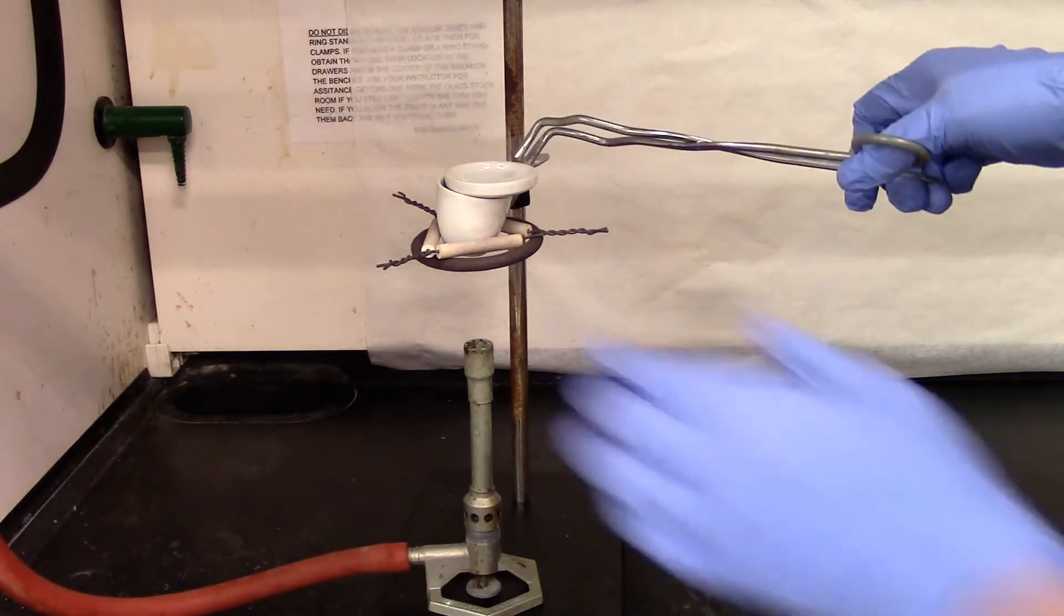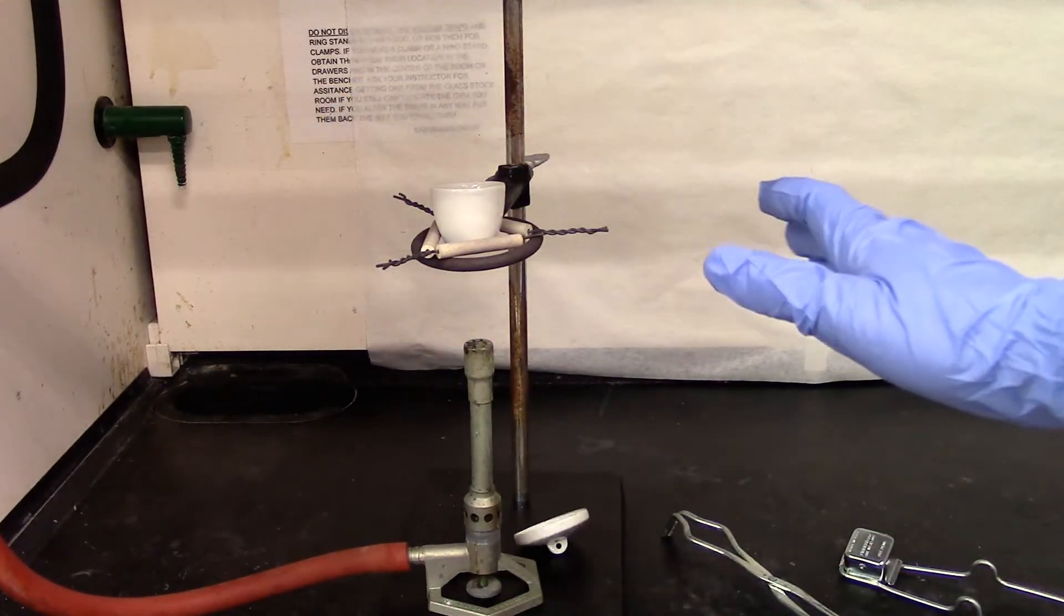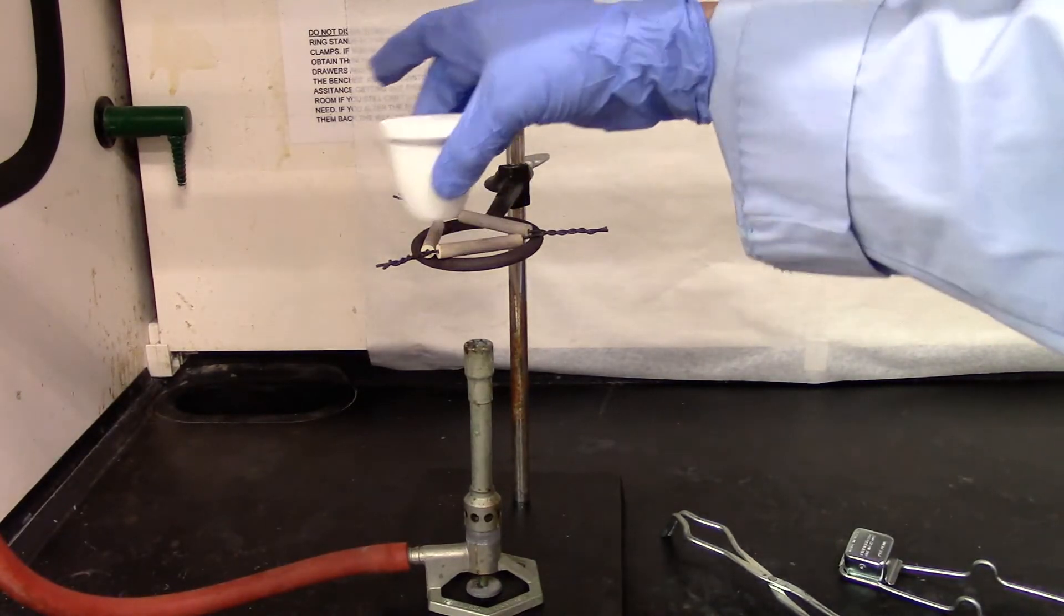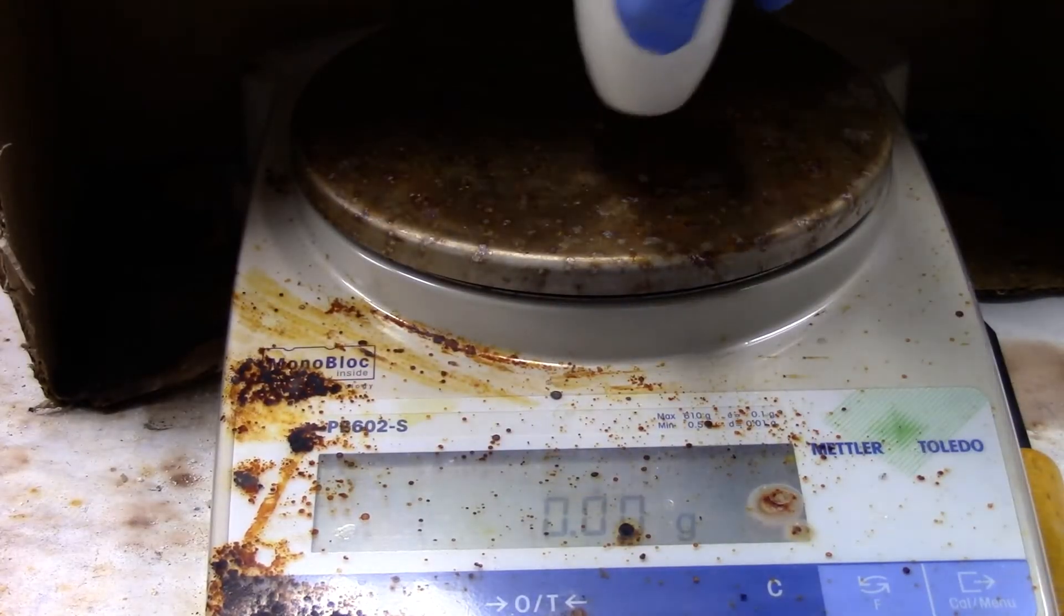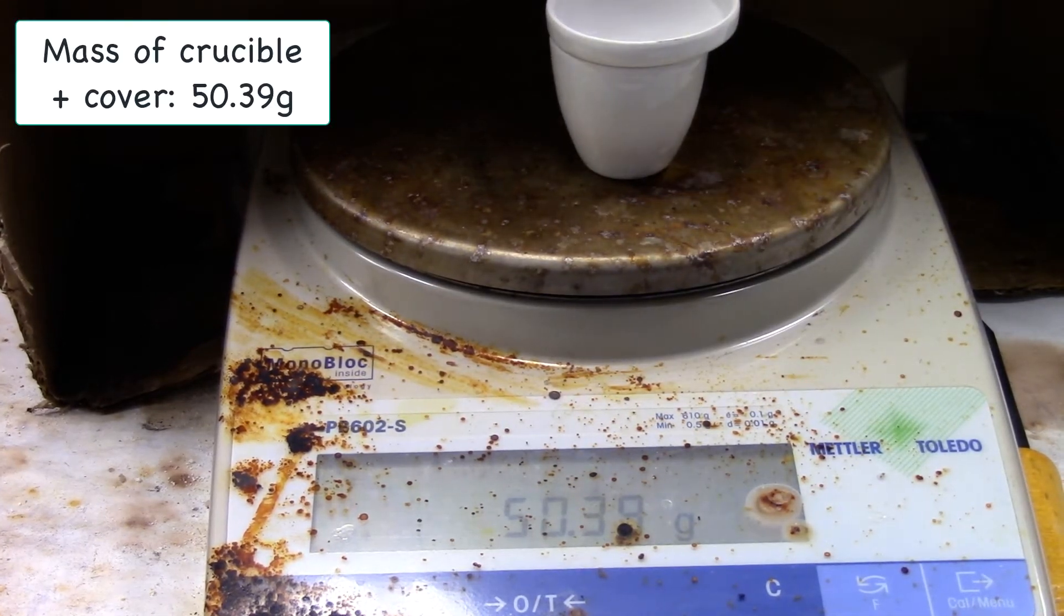So I'll check if it's cooled down. Feel it gently. So it's cooled down. I'm going to take the crucible and the lid and weigh it empty. I'm going to tare the balance and put my crucible with the lid. So that's the mass.